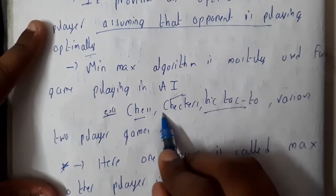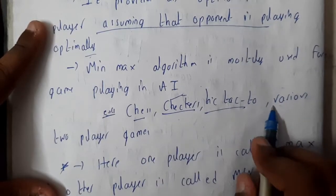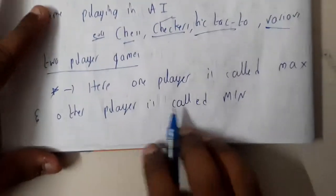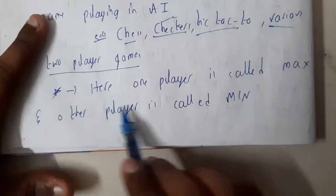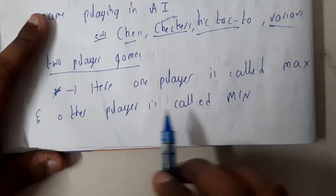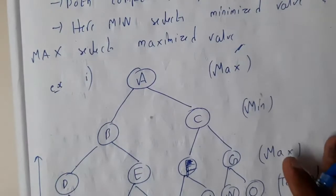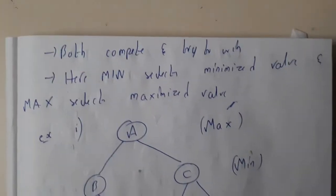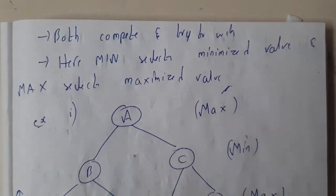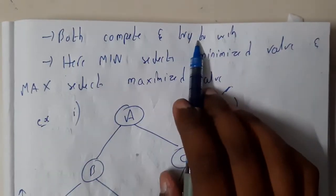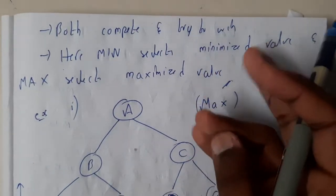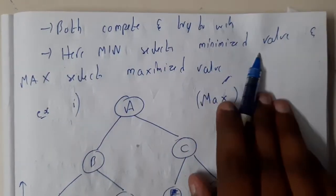One player will be the max and the other player will be the min. Min and max are the names of the players. This method is really simple - please understand the concept. Both compete and try to win. Min selects the minimized value and max selects the maximized value.